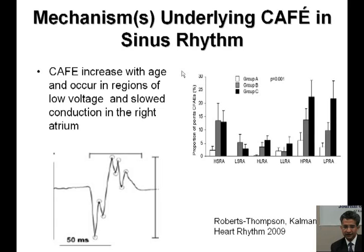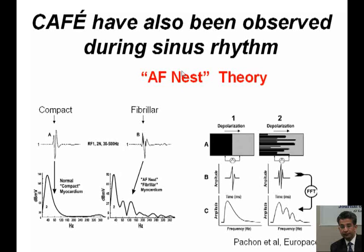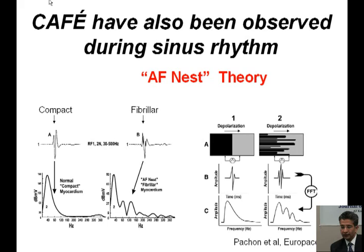The next logical step was for Pachon to target these areas — distributed in the septum, the appendage, and near the pulmonary veins — not unlike where Nademanee found his original complex electrograms during AF. He found long-term benefit in terms of AF control, though these were electrograms targeted and located during sinus rhythm only. This sparked interest in potential 'AF nests' where fibrillar conduction during sinus rhythm may represent the sources of AF.